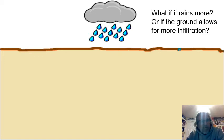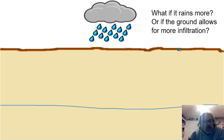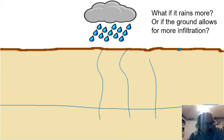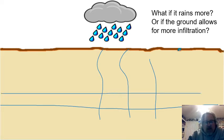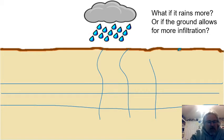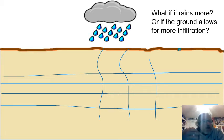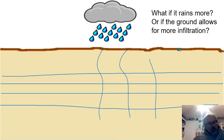What if it rains more, or the ground allows more water to come in? If it rains a lot during a very rainy season, more water comes in faster than water gets out of the ground — that means it's going to keep filling up. The water table isn't one fixed spot; it can move up and down. If it rains more, the water table goes up; if it rains less, the water table goes down.